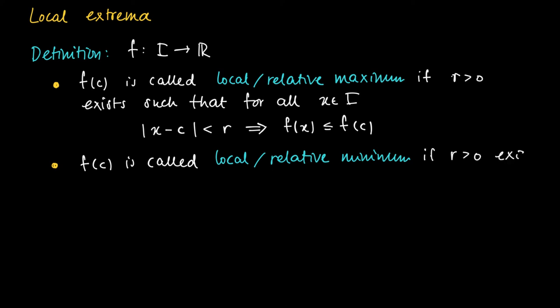Similarly, we define f(c) as a local or relative minimum if the converse inequality holds. So r larger than 0 exists such that for all x in I, the distance from x to c is smaller than r implies that f(x) should be at least f(c).